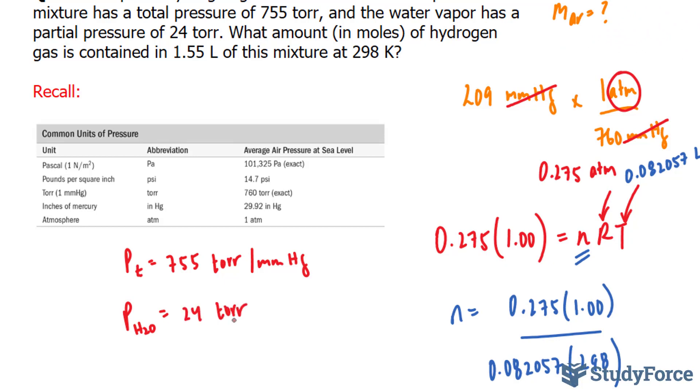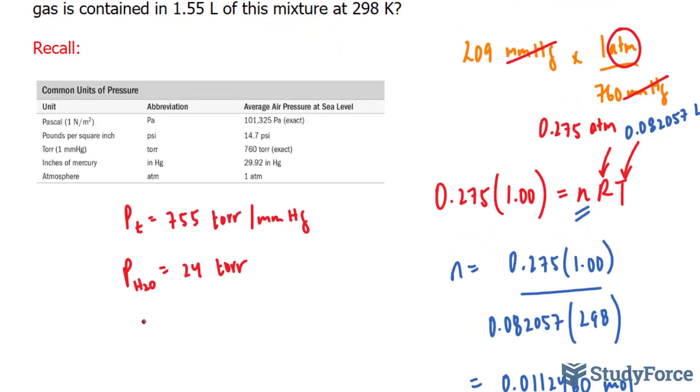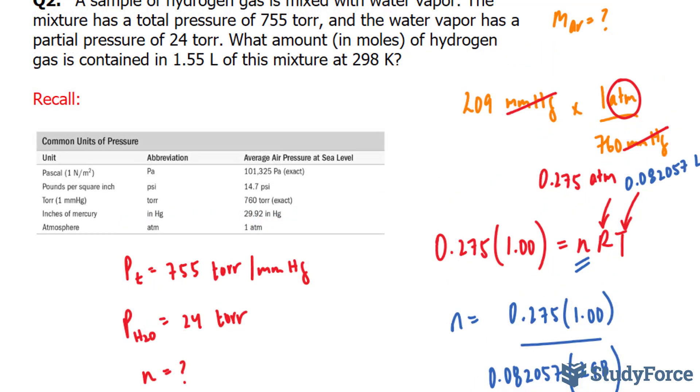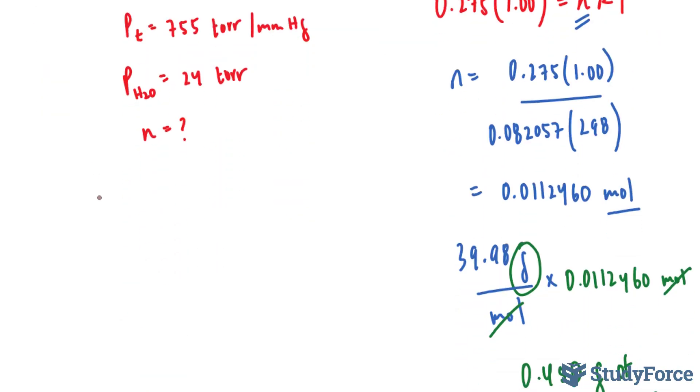Furthermore, they are looking for the amount in moles, which I'll call N, of hydrogen gas contained in 1.55 liters, that's our volume. And this is our temperature, 298 Kelvin. To put this all together, we'll be using the ideal gas law formula, which looks like this: PV is equal to nRT.